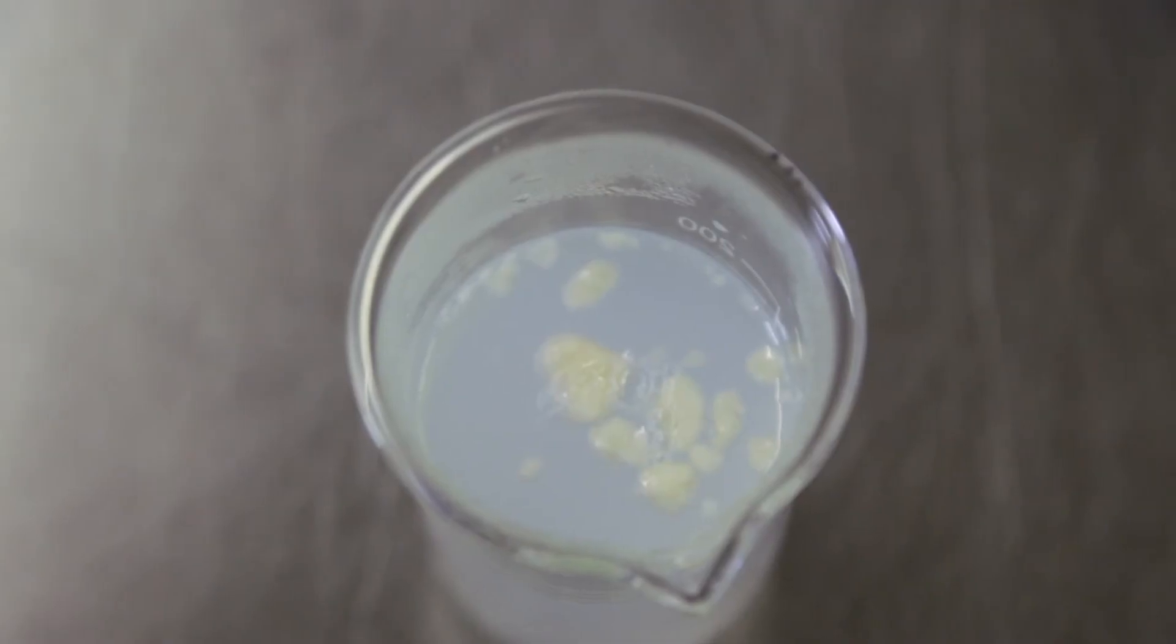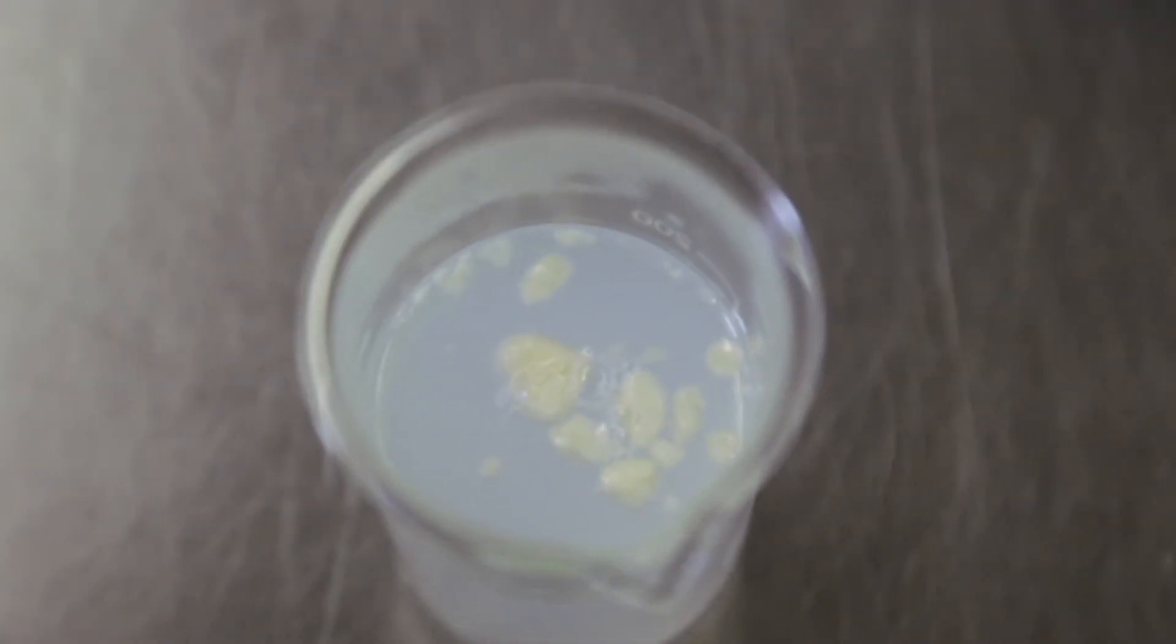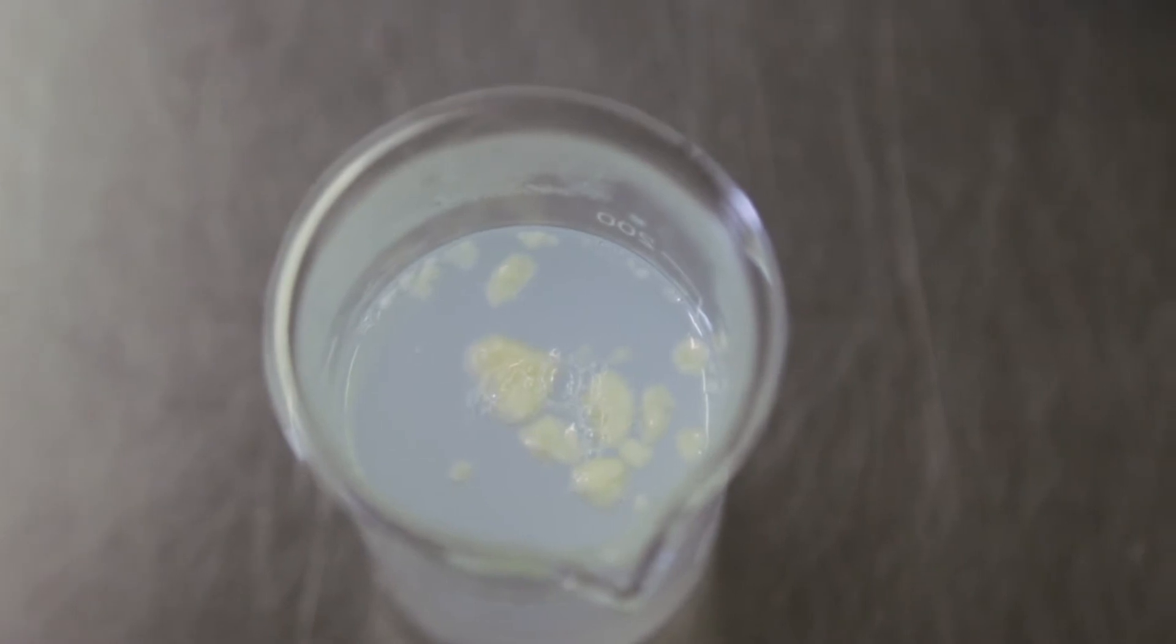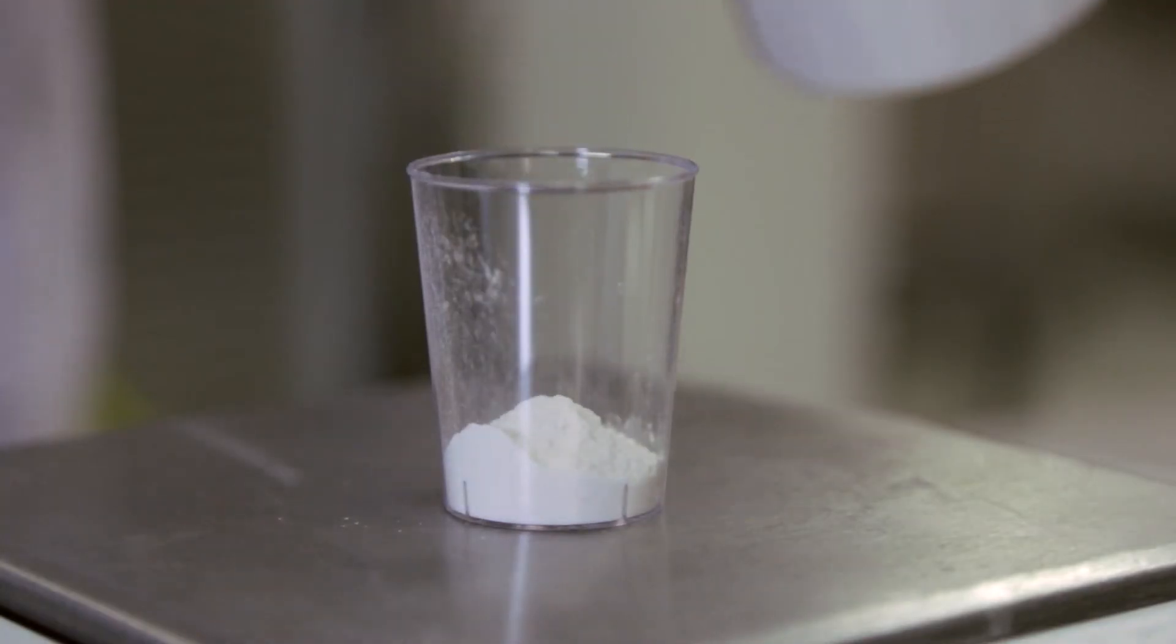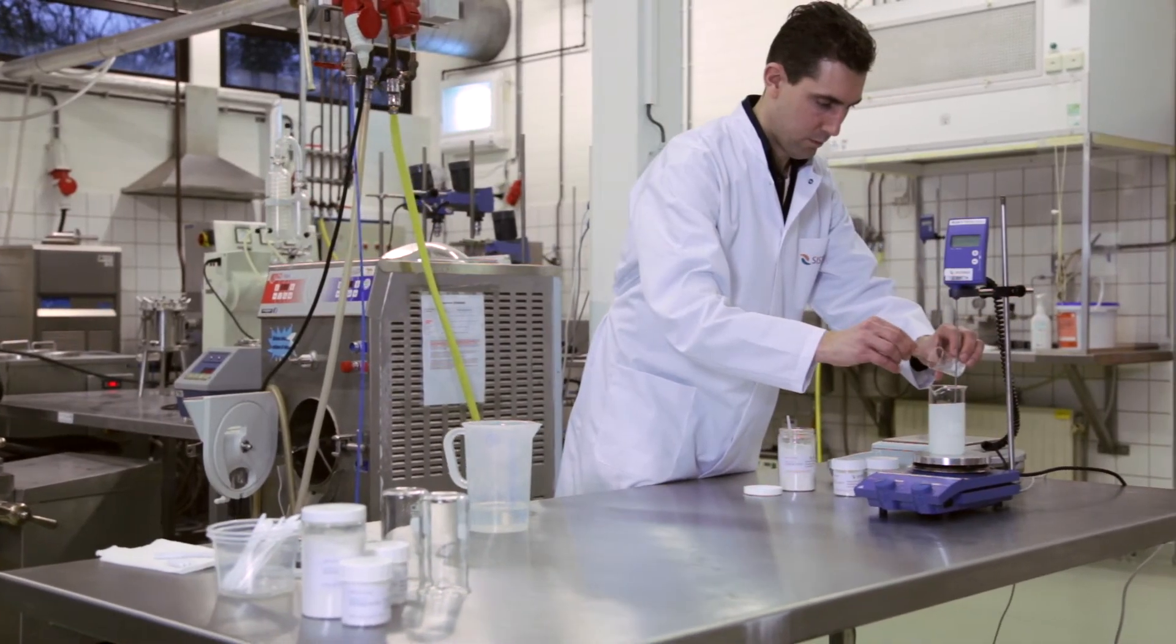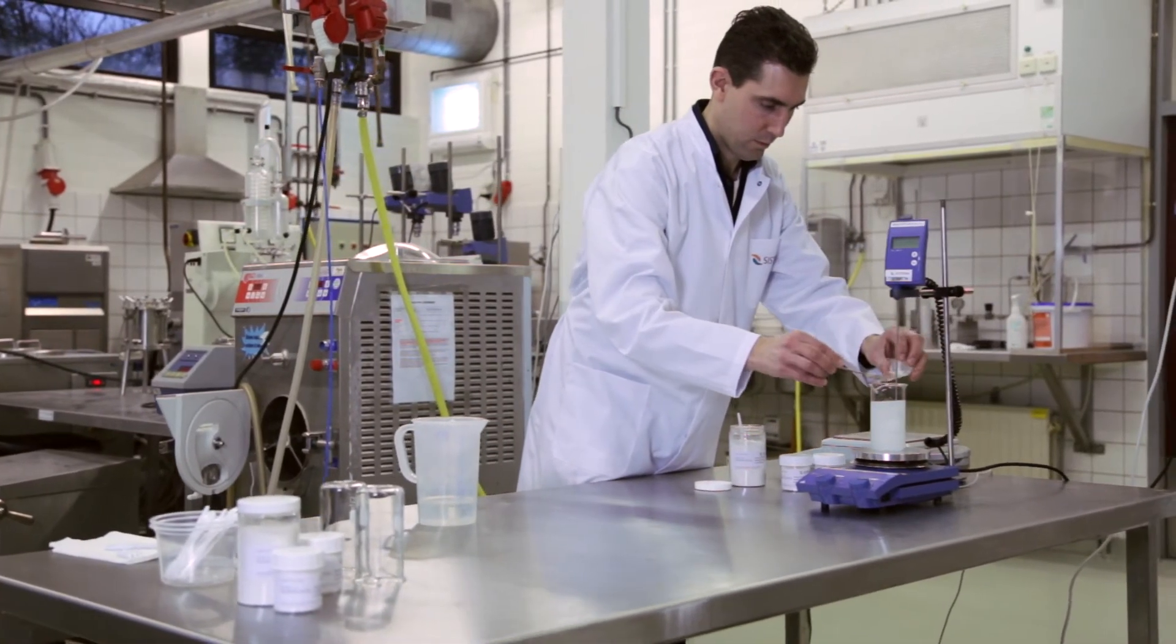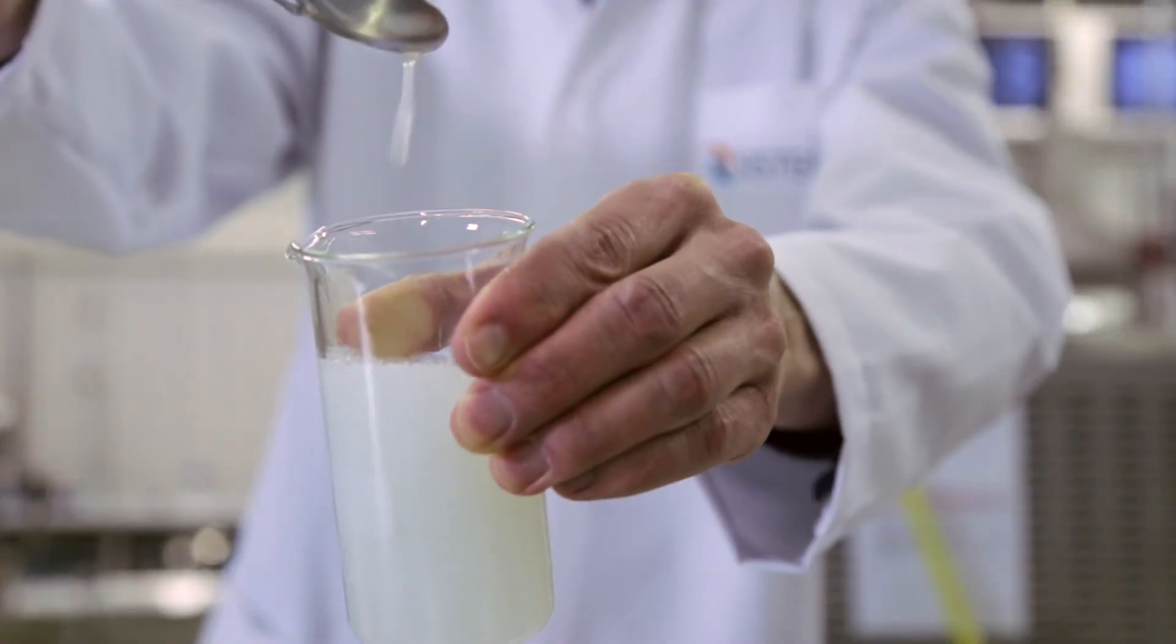Intensive shear and extra time will eventually dissolve the lumps, but it is better to avoid this method of dissolving. When your only option is to add sucrose esters to hot water, try to premix them with other ingredients like sugar, starch, or milk powder.